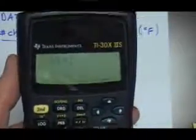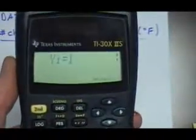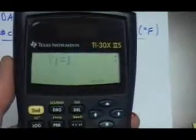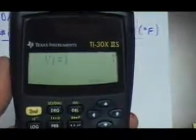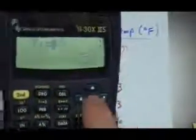And now notice, it's not prompting me for the frequency as it would for one variable data. It's prompting me for the y value that's related to that x value. And that's the temperature. That's 69.7 degrees. And I'll push the down arrow key to enter that.